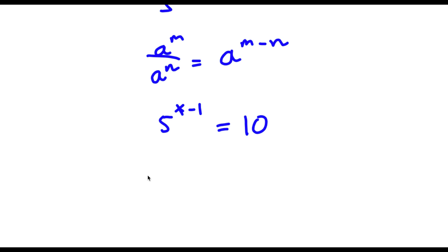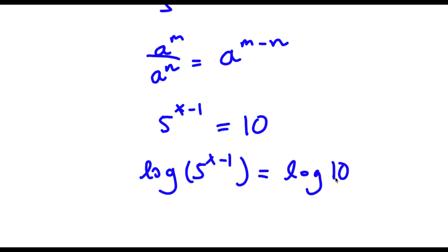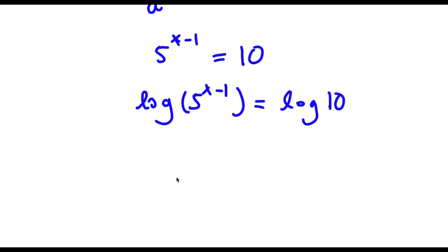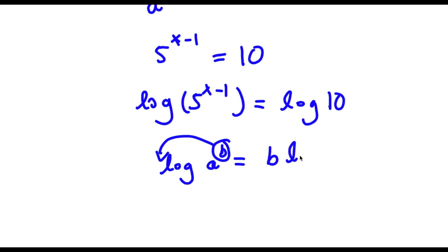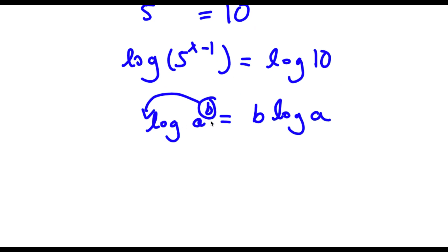Now I'm going to go ahead and take the log on both sides. So now I have log of 5 to the power of x minus 1 is equal to log 10. Now if I have something in the form log a to the power of b, I can actually move this exponent b to the front of the logarithm, so this is going to equal b times log a. This property is really useful because here b is an exponent, and solving for an exponent is actually really hard.